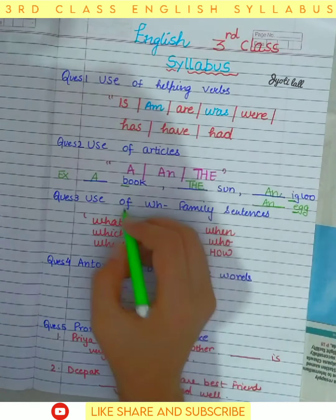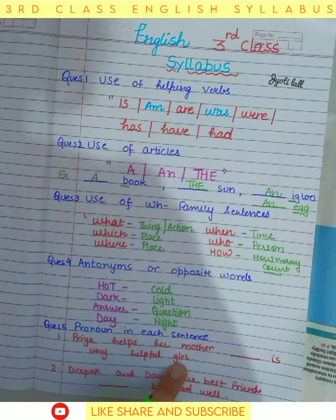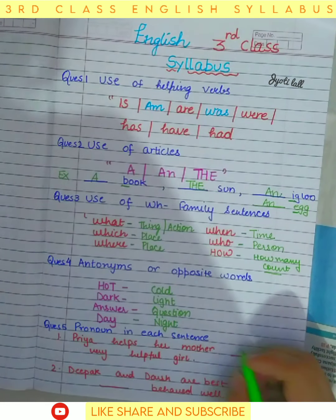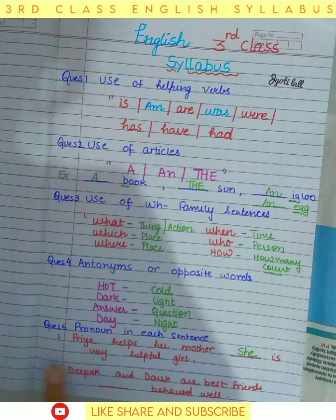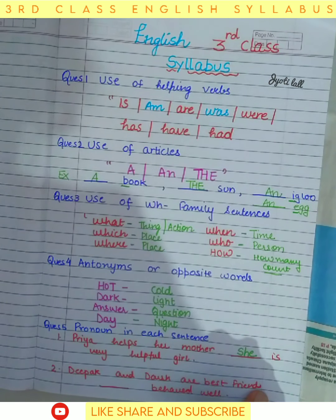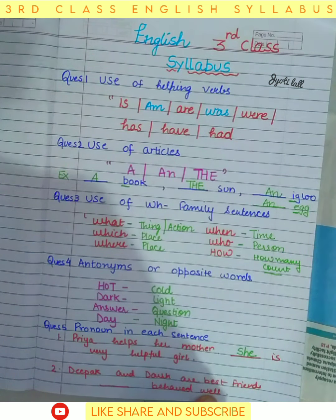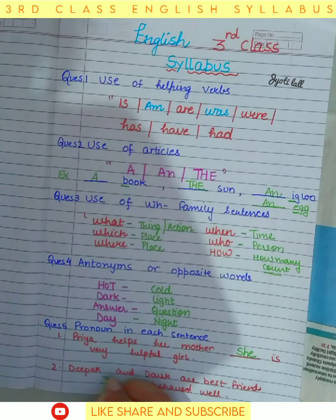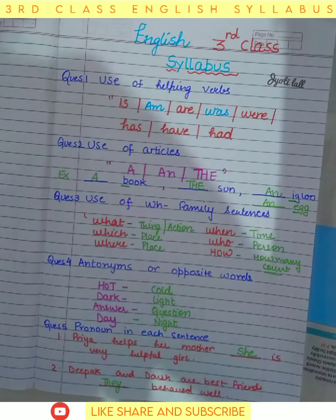The next question is about pronouns. In the sentence 'Priya helps her mother — dash is a very helpful girl', we write 'she' because she is used for a girl. In 'Deepak and dash are best friends — dash behaved well', the suitable pronoun is 'they', used for more than one person.